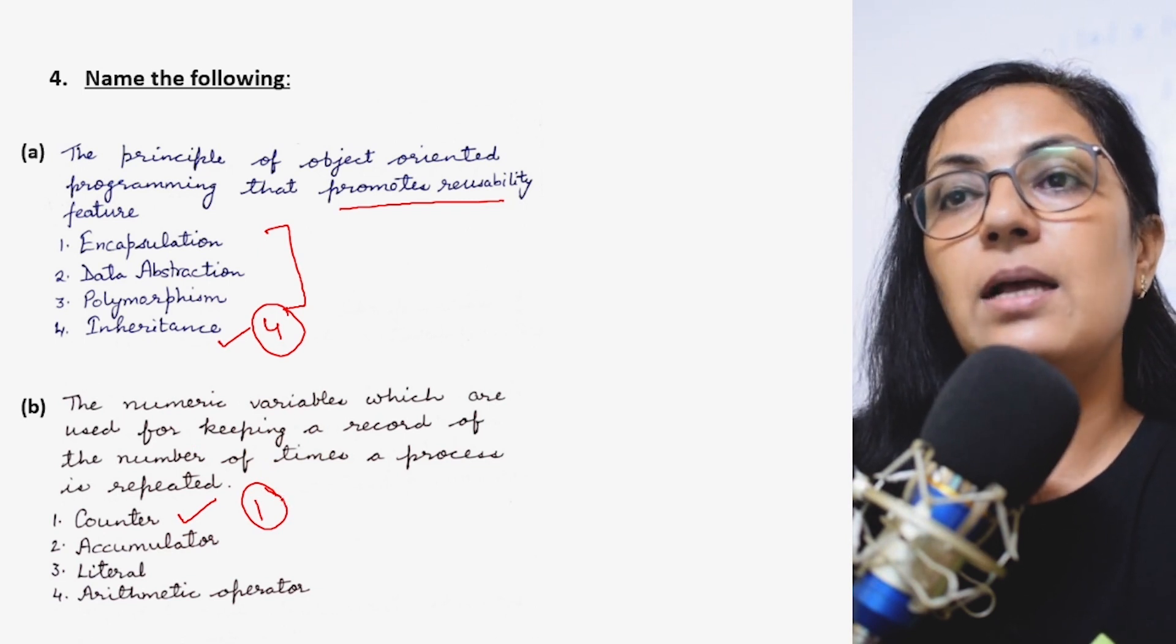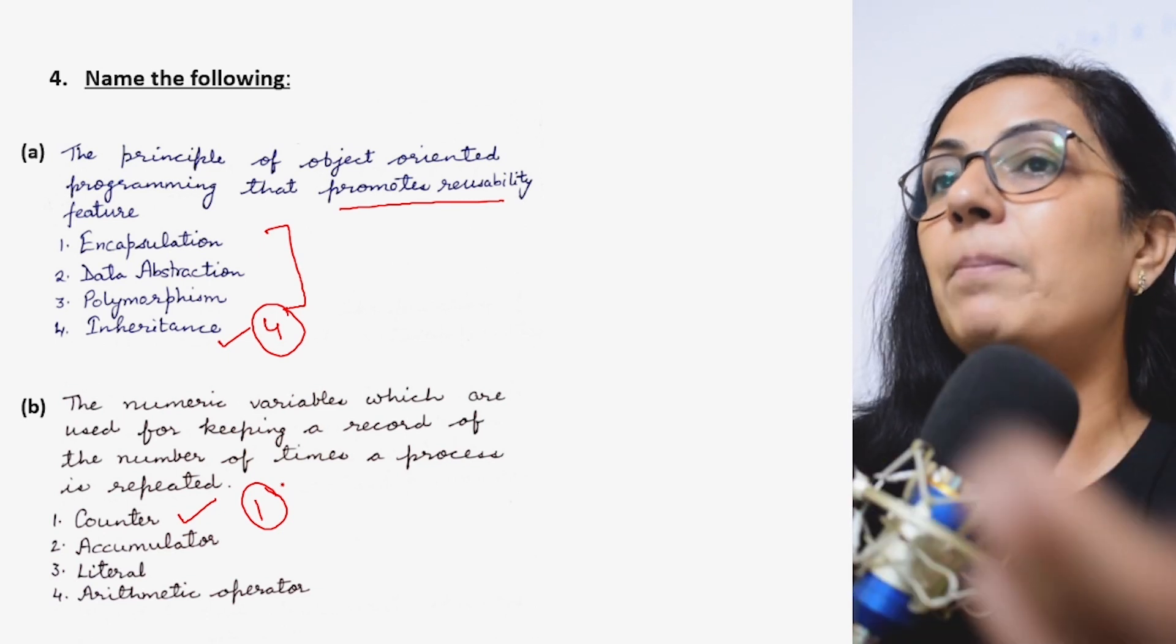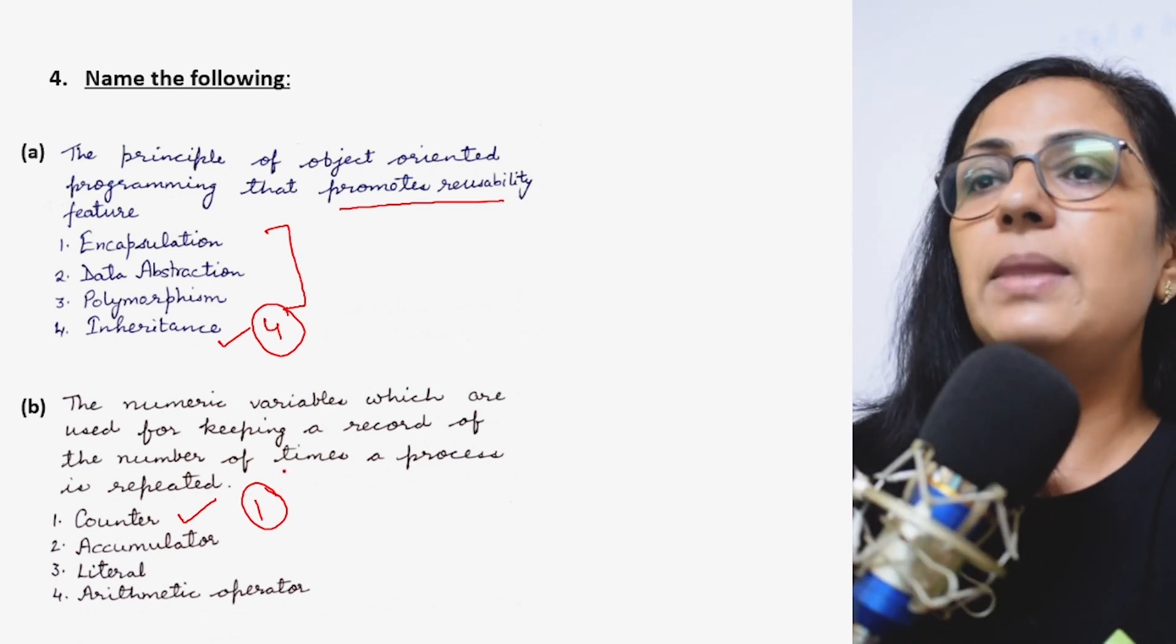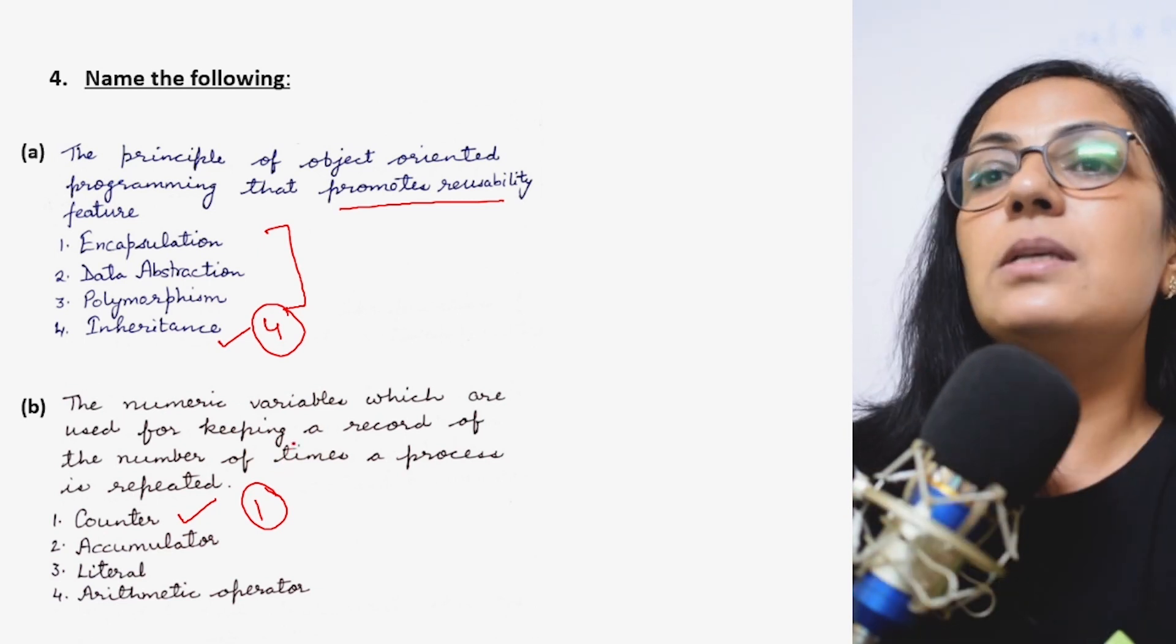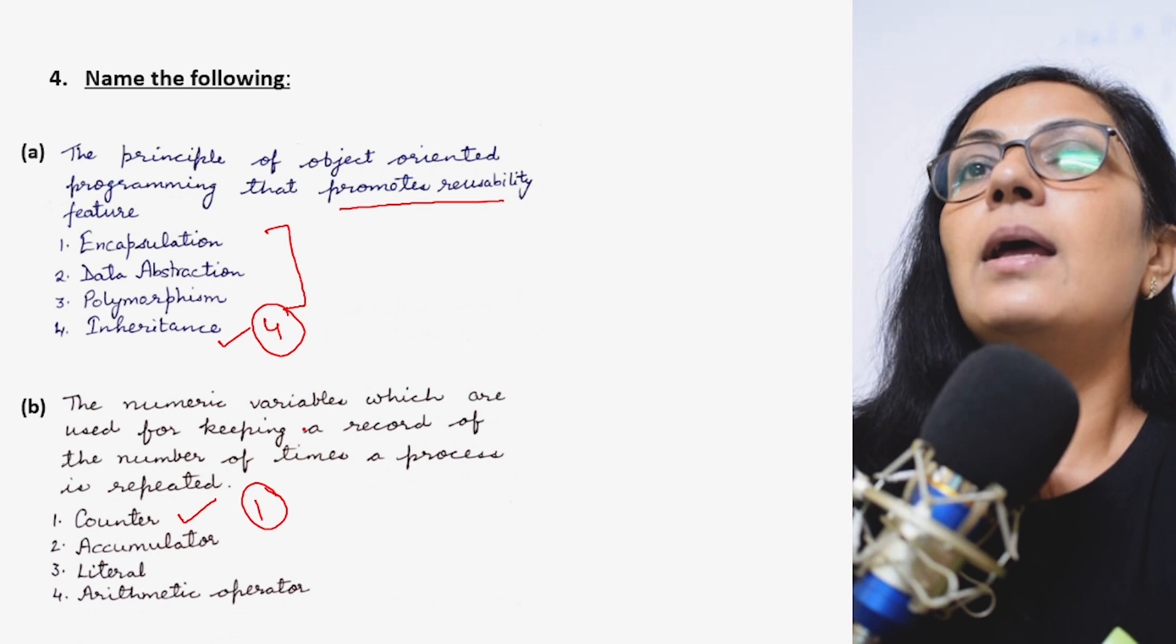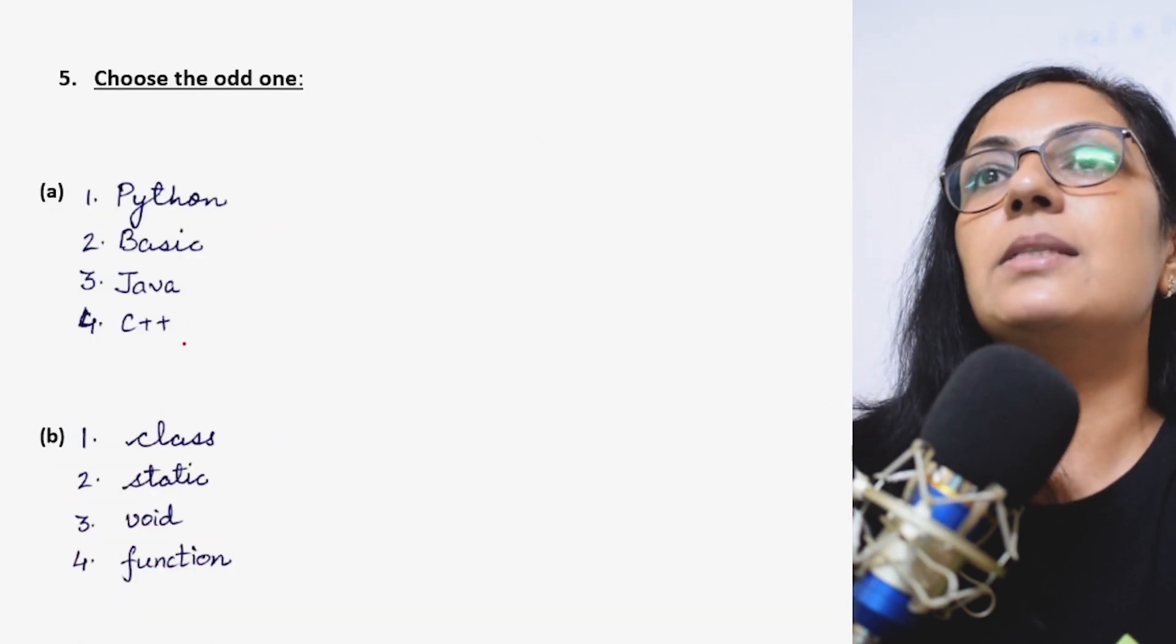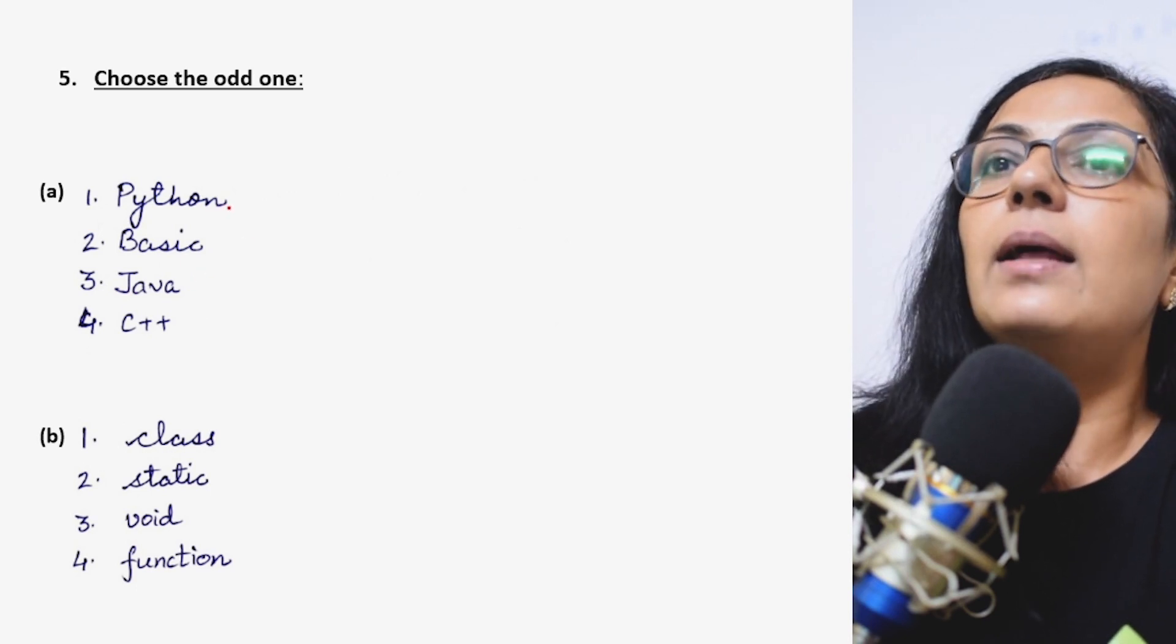So option 1 is the correct answer. Counter, counter, counter means which counts something. How many numbers are even or how many values are true, something like that which gives you a count of the process which you are doing. Now we move on to the last question of today's video, that is choose the odd one.